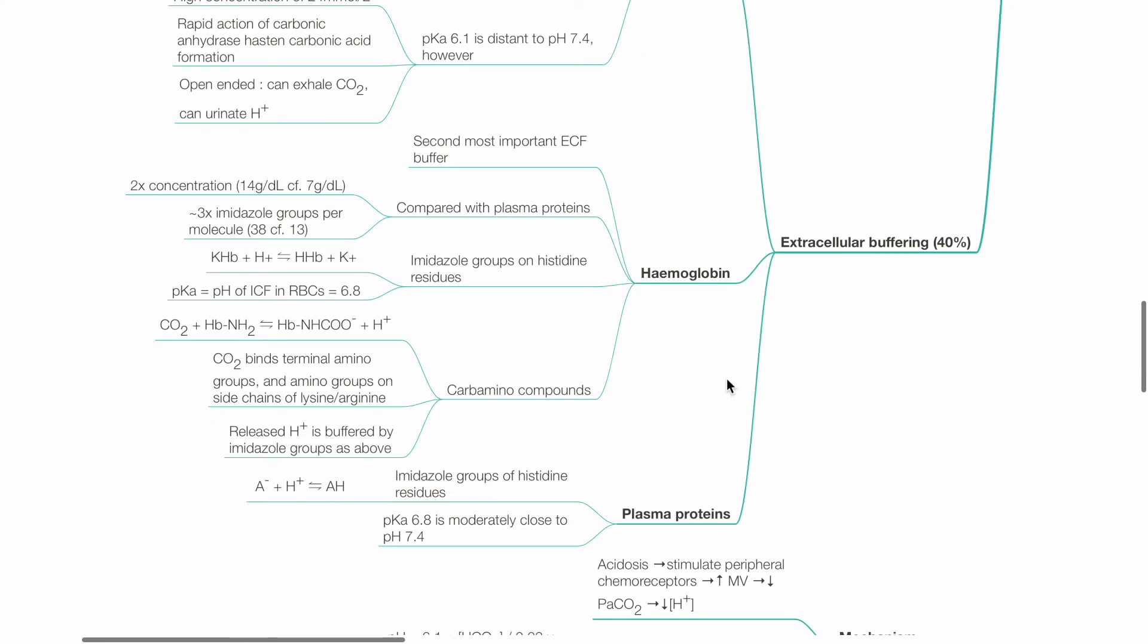Hemoglobin is the second most important ECF buffer. Compared with plasma proteins, it has 2 times higher concentration of 14 grams per deciliter and 3 times more imidazole groups per molecule—38 compared to 13 in plasma proteins. Imidazole groups on histidine residues are the main site of action for buffering. pKa of imidazole groups is 6.8. Carbamino compound formation: CO2 plus HbNH2 reversibly forms HbNHCOO− plus hydrogen ion. CO2 binds to terminal amino groups and amino groups on side chains of lysine and arginine. Released hydrogen ions are buffered by imidazole groups as described above.